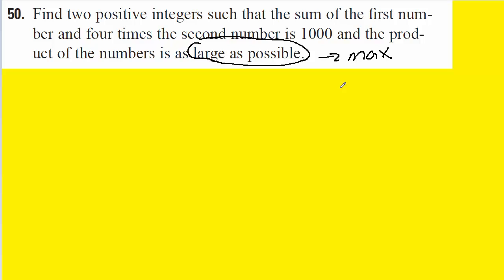In optimization problems, you're going to need two equations usually. You need what is called a constraint equation and then also what is called an objective equation.